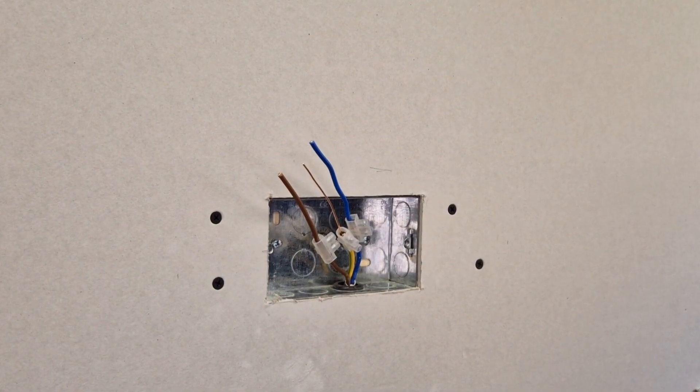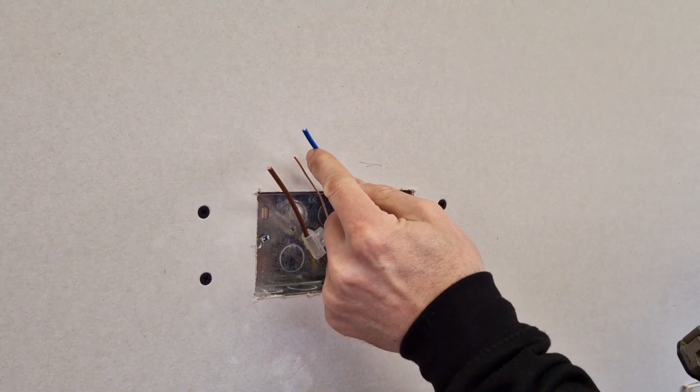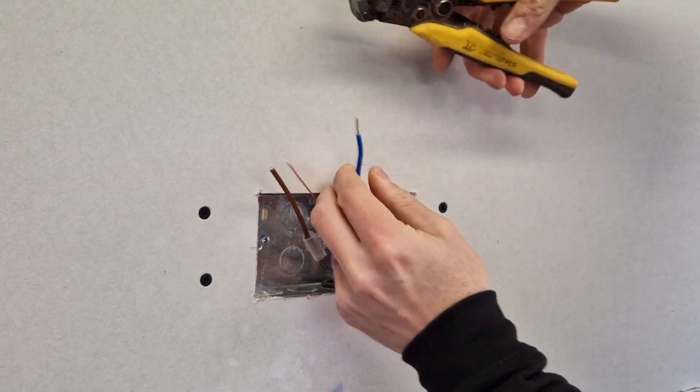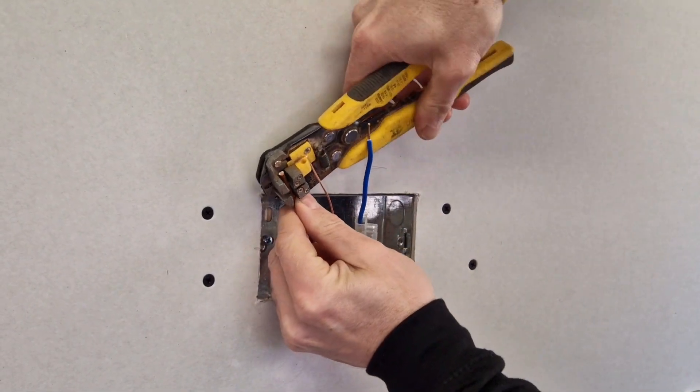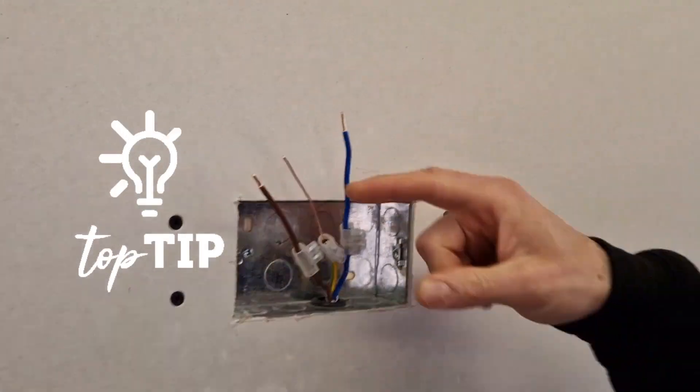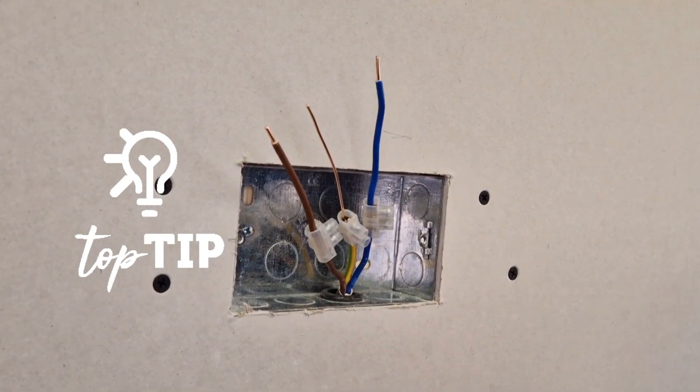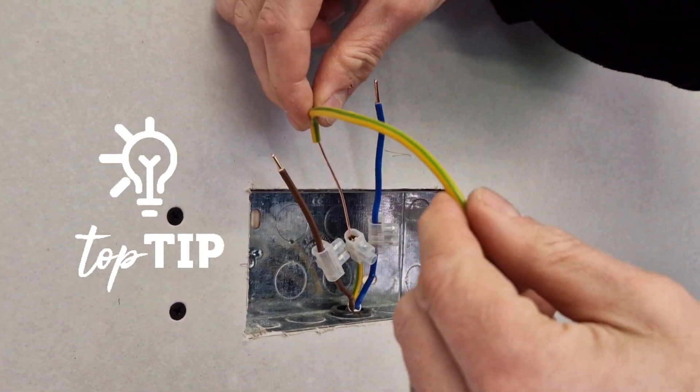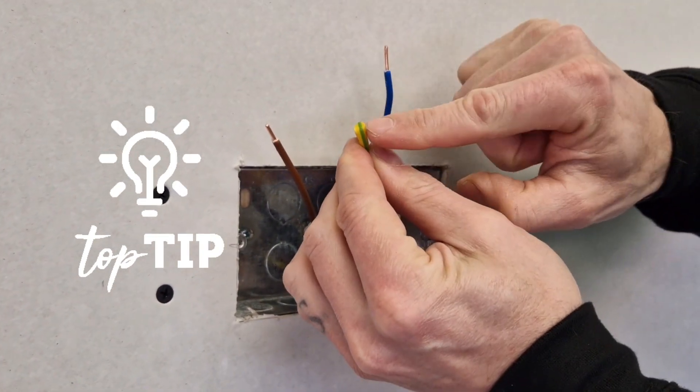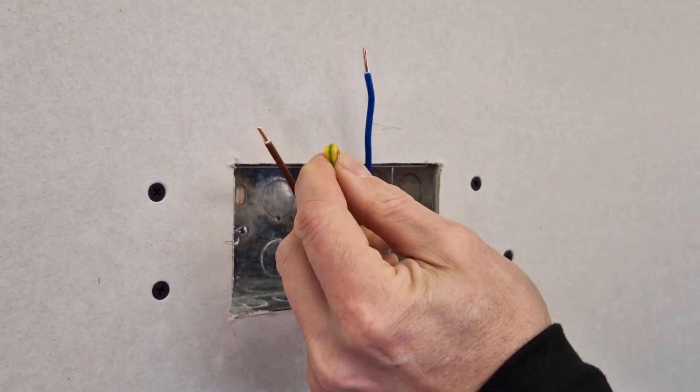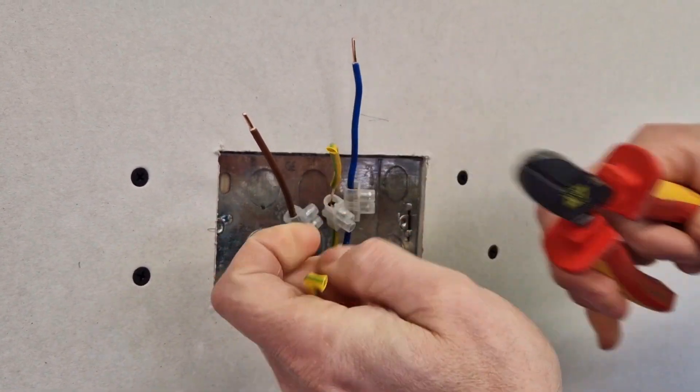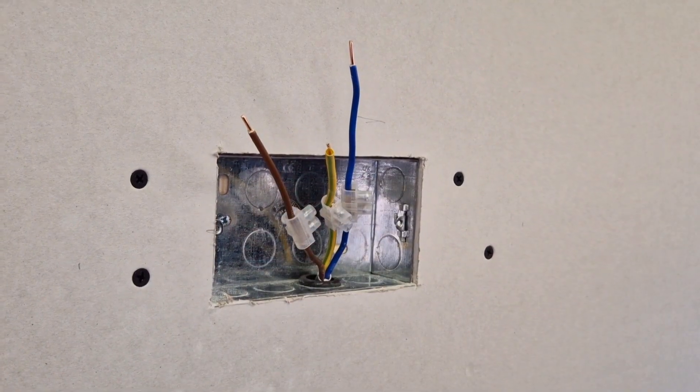Now we just need to take off roughly about 15 mil off the end of each of these. And then a top tip for the earth conductor is to get your sleeve in, slide over the top, and then if you bend it you can see where the copper ends. If you keep your eye on that actual part of the sleeving, you can come back and when you slide the sleeving down, that will be the right measurement.